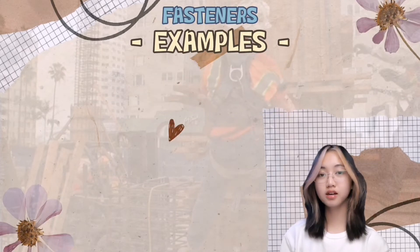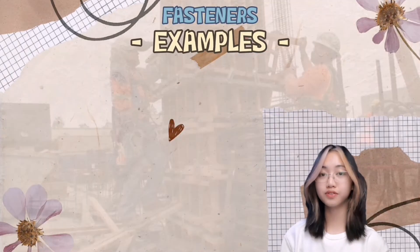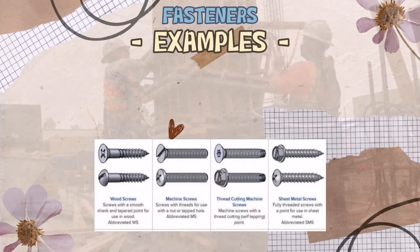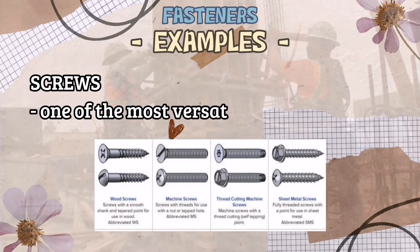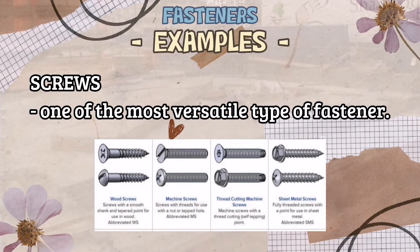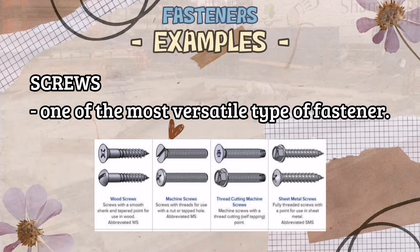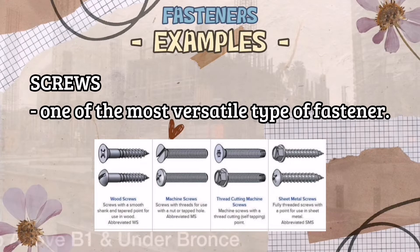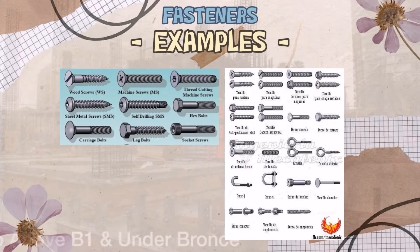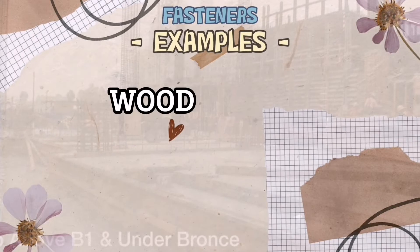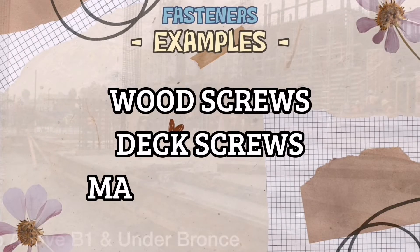Depending on the needs, numerous types of fasteners are available on the market. Screw fasteners are one of the most versatile types of fasteners. The threaded shafts present give them a more durable holding power. These fasteners do not require anything to hold them in place. Screws come in a wide variety of types, including wood screws, deck screws, and machine screws.